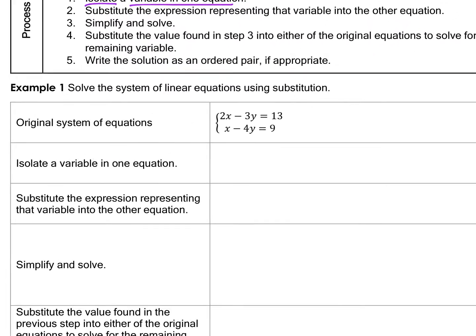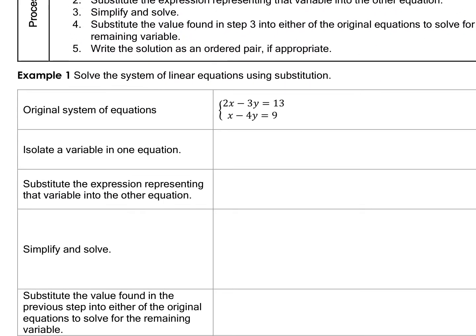The first step is to isolate a variable. If possible, we want to isolate a single variable — that's a variable with no coefficient. Notice this one here is a single variable because the others have a 2, a 3, and a 4 in front. So I'm going to isolate it by adding 4y to both sides, giving us 4y plus 9.